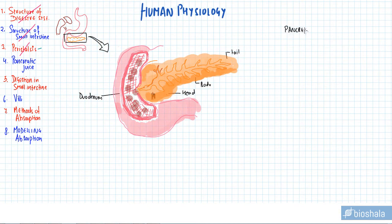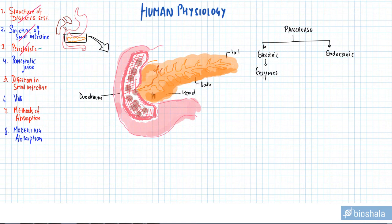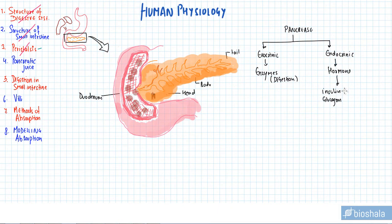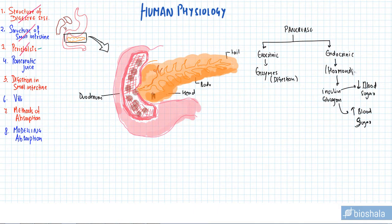Pancreas can be divided into two portions: the exocrine portion and the endocrine portion. The exocrine portion secretes all the enzymes we utilize in digestion, and the endocrine portion secretes hormones such as insulin and glucagon. Insulin helps to lower blood sugar levels, while glucagon increases blood sugar levels.